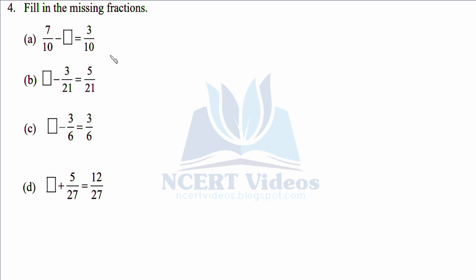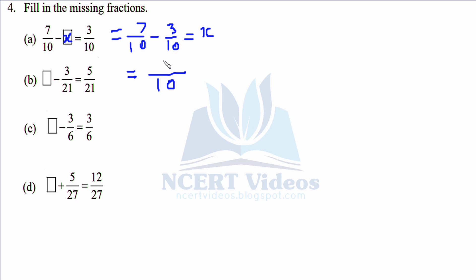Question 4: Fill in the missing fractions. In the first part, let the box be x. Take seven over ten to the other side: x equals seven over ten minus three over ten, which gives four over ten. Further reduce by factor 2: four over ten simplifies to two over five. That is the value of x that goes in the box.